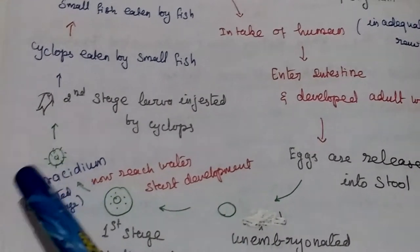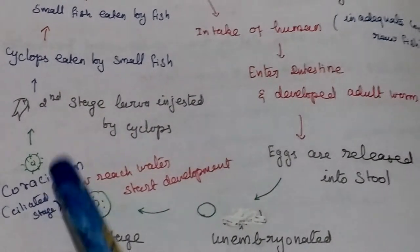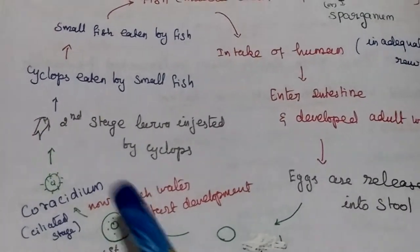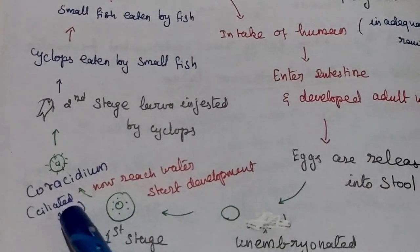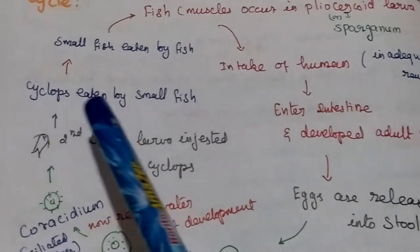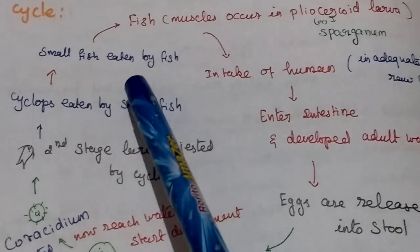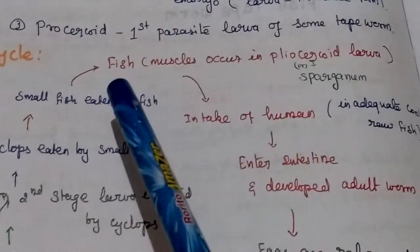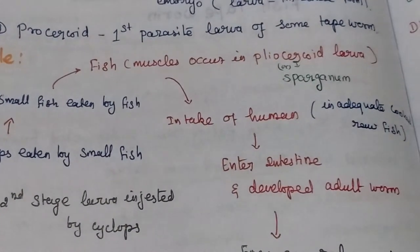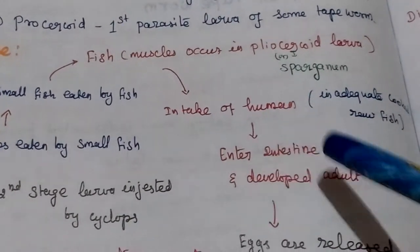When the eggs reach water, development starts. The first stage is called coracidium, which has a ciliated stage and moves in water. The second-stage larvae is ingested by Cyclops. Inside the Cyclops, the larvae develop. The Cyclops is then eaten by small fish, and the small fish is eaten by big fish. The fish muscles then contain the plerocercoid form — the infective form — and the cycle repeats when humans consume the fish.